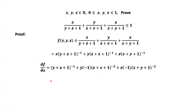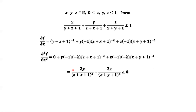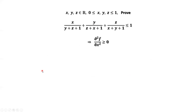We consider the second-order derivative of f. We write the right-hand side as the following. Because x, y, and z are bigger than or equal to zero, this part is bigger than or equal to zero. This means the second-order partial derivative of f with respect to x is bigger than or equal to zero.